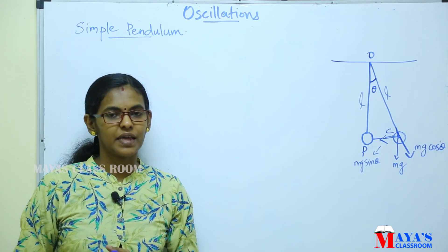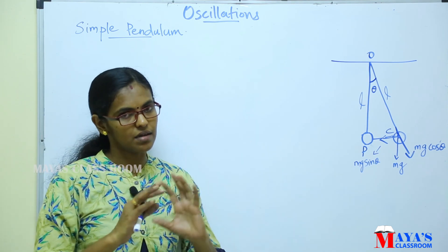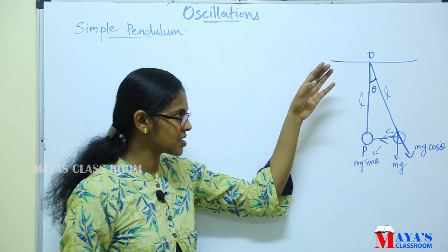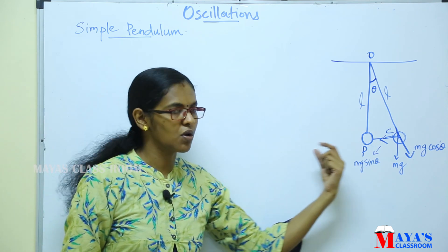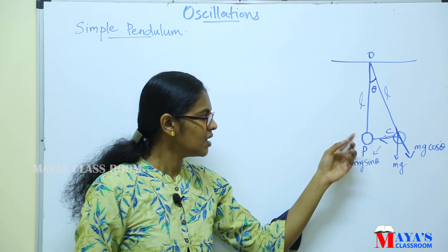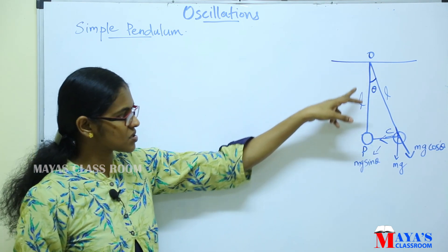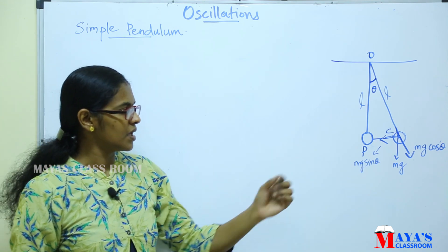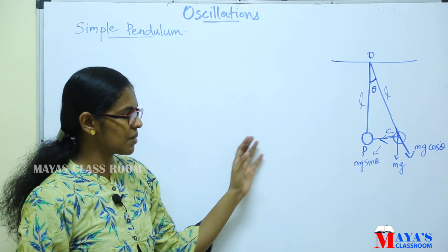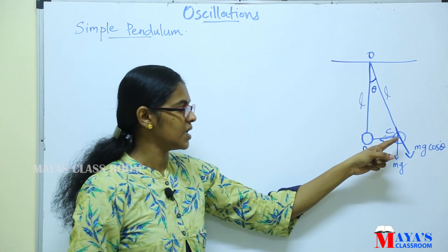There is a bob attached to a string — a simple pendulum with a particular mass. The bob is attached and oscillates to and fro. We consider the angular displacement θ and the string length L. The weight mg acts downward and is resolved into two components: vertical and horizontal.